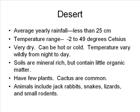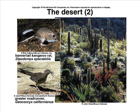In the desert, the average yearly rainfall is less than 25 centimeters and the temperature range is from negative 2 to 49 degrees Celsius. All deserts are very dry, but some can be very cold while others can be very hot. Temperatures vary wildly from night to day. Desert soils are rich in minerals but contain very little organic matter.